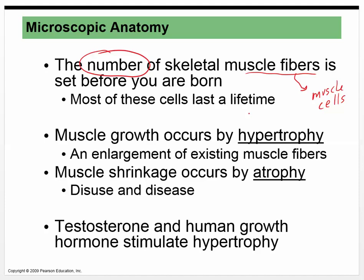Muscles do get bigger through time and we have some level of control over that. We call this increase in growth hypertrophy — that's an increase in muscle size, not muscle number. So when you hit the gym and start lifting heavy things, you're not increasing the number of muscle cells you have; you're just increasing the size of the muscle cells you already have. That's hypertrophy.